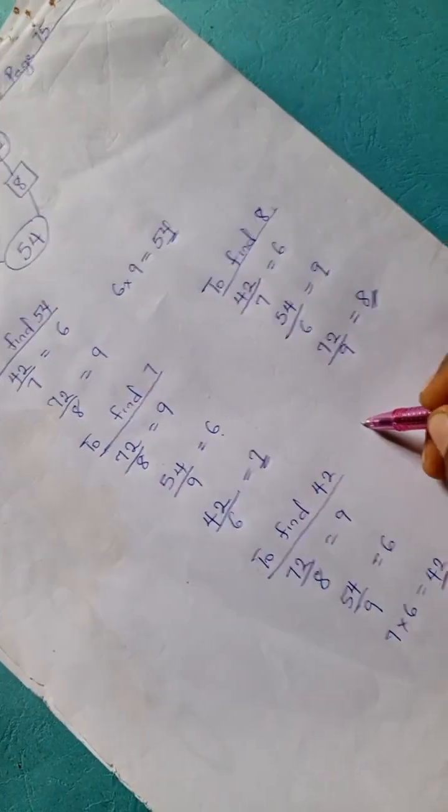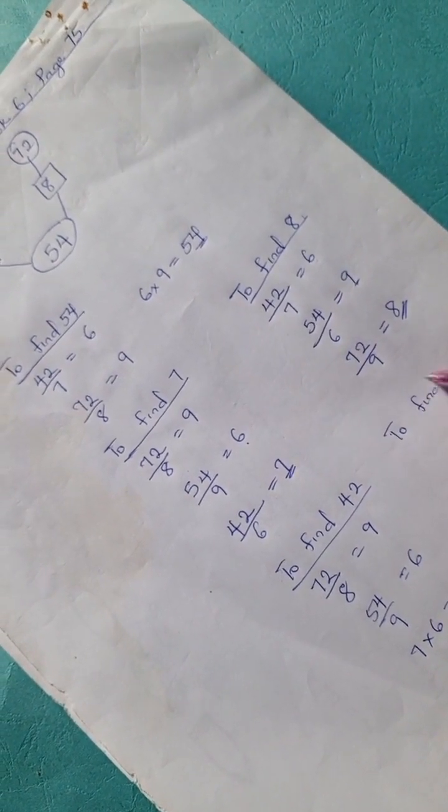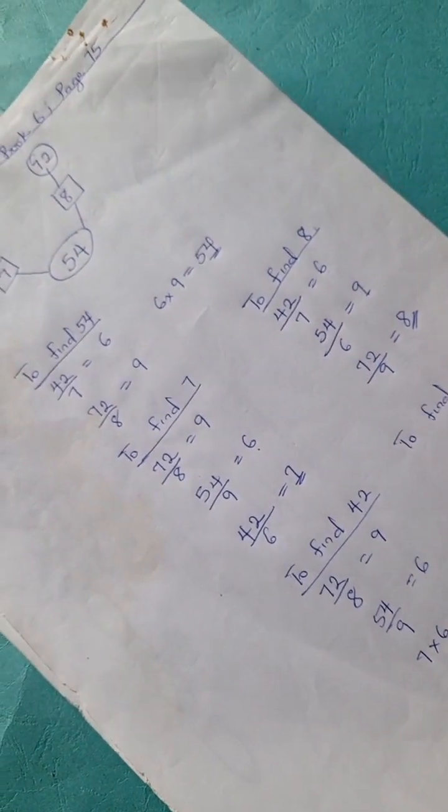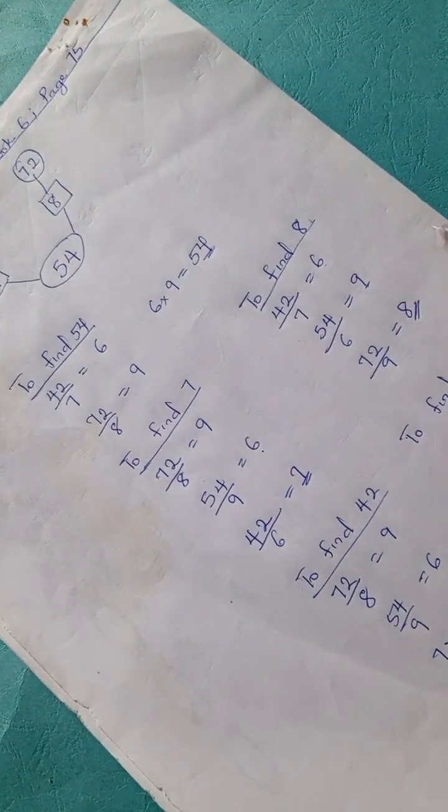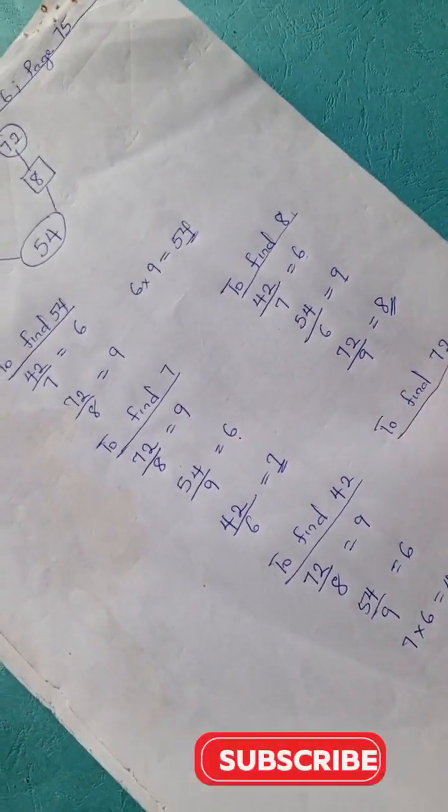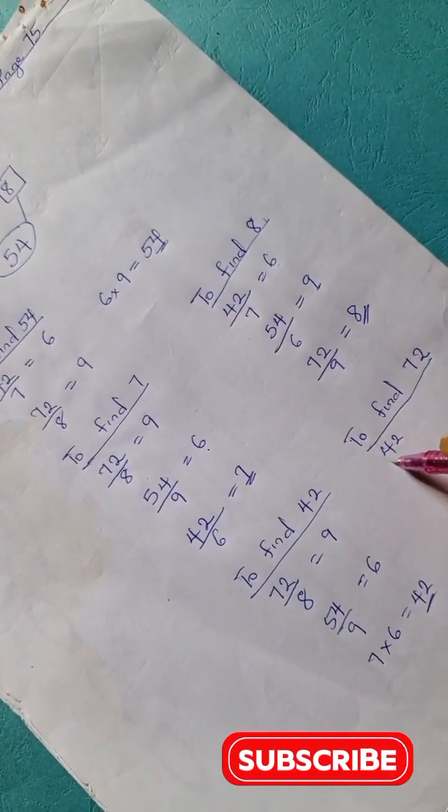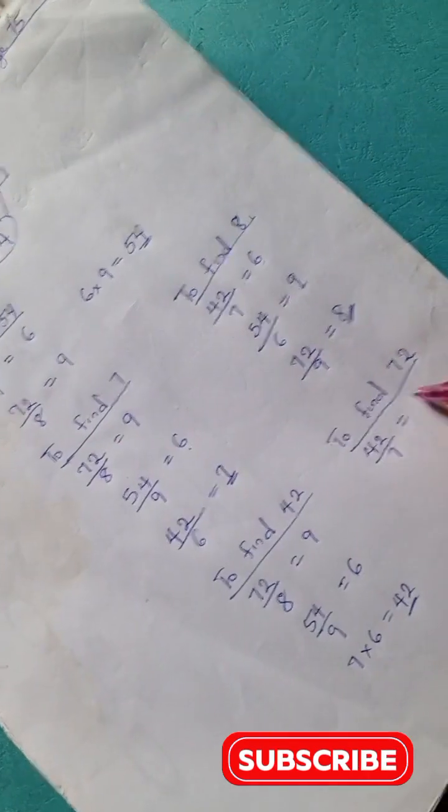Then lastly, we're going to find 72. We're going to have 42 divided by 7 is 6.